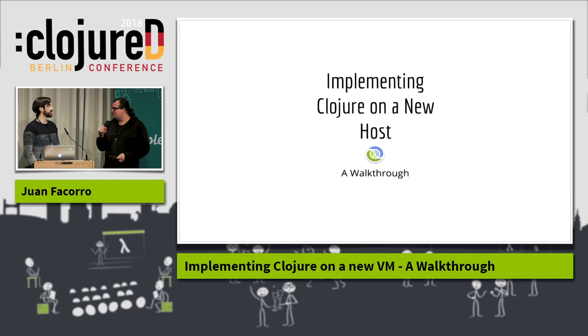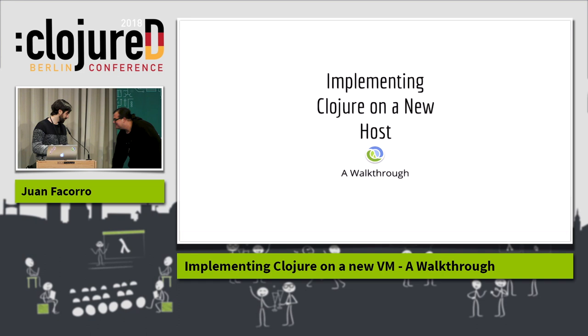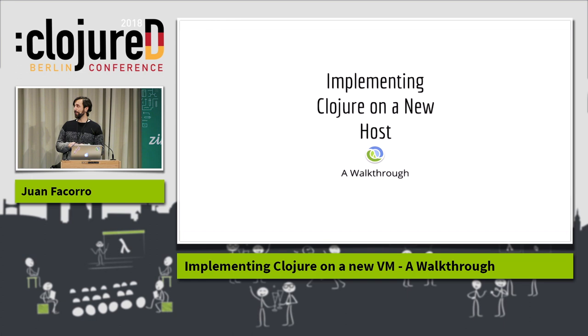Our next speaker is Juan Facoro. He's a polyglot programmer currently working in Erlang, as you can see on his notebook. He talks about the challenges he faced while implementing Clojure on another virtual machine. Give a warm applause for Juan. Thank you. I am very excited to be here. It's my first Clojure conference as a speaker, my first time in Berlin, and probably because I had five or six coffees today. Today I'm going to share how I would go about implementing Clojure on a new host, based on my experience implementing Clojure on the Erlang VM.